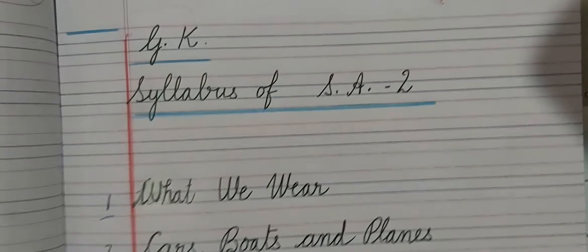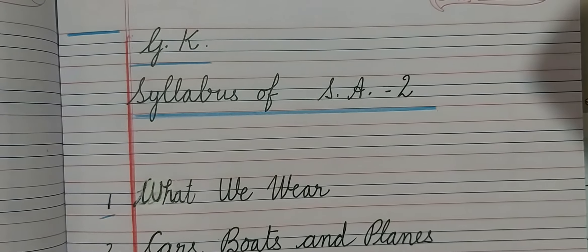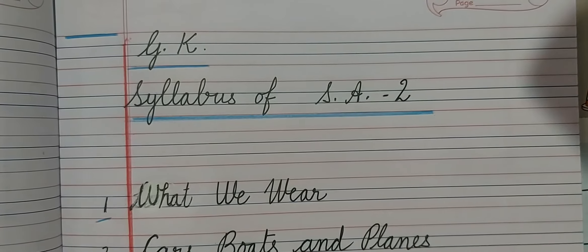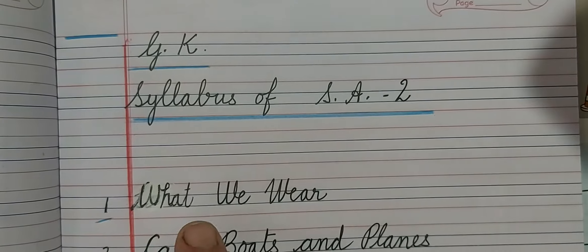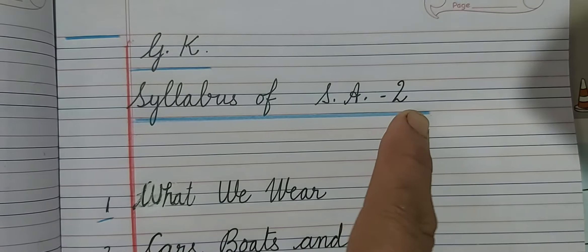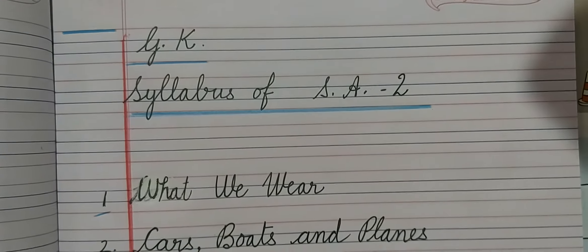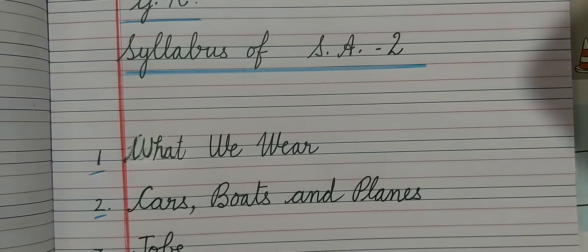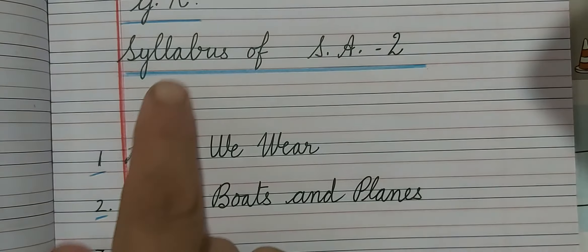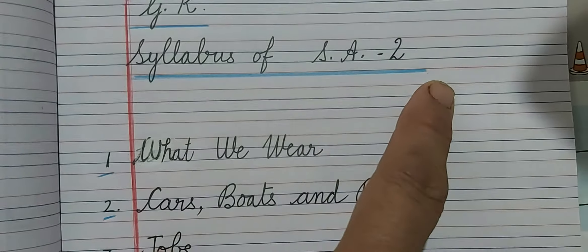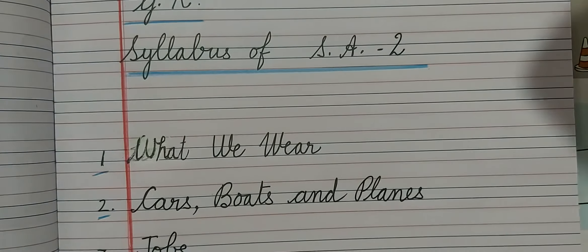Good morning children. Welcome to JK class. Now we are going to start the syllabus of Subjective Assessment 2. In the GNWC copy you will write: Syllabus of Subject Assessment 2.